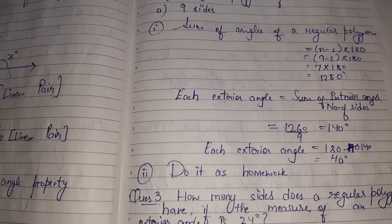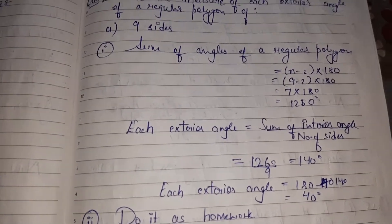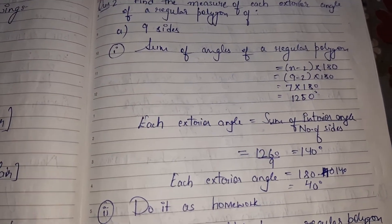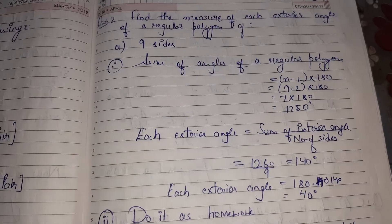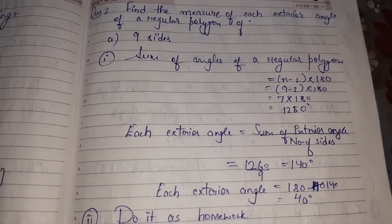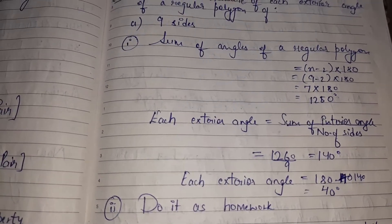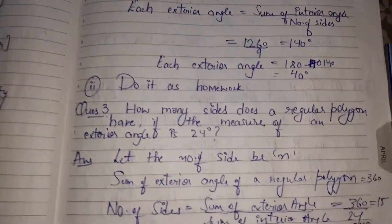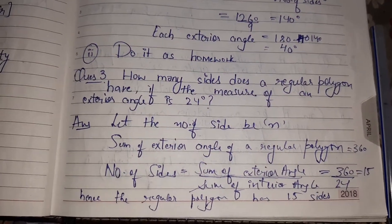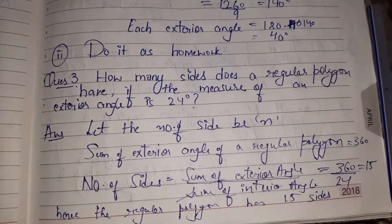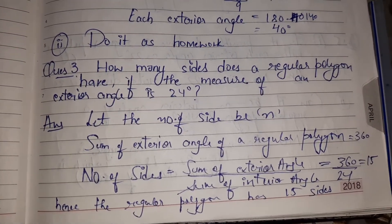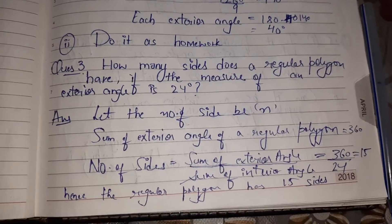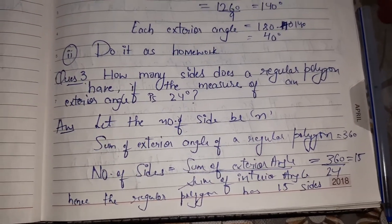The second question you have to do as homework — the second part. In the same manner, find the sum of angles using the same formula, then find each exterior angle by subtracting from 180. See the third question: How many sides does a regular polygon have if the measure of an exterior angle is 24 degrees?